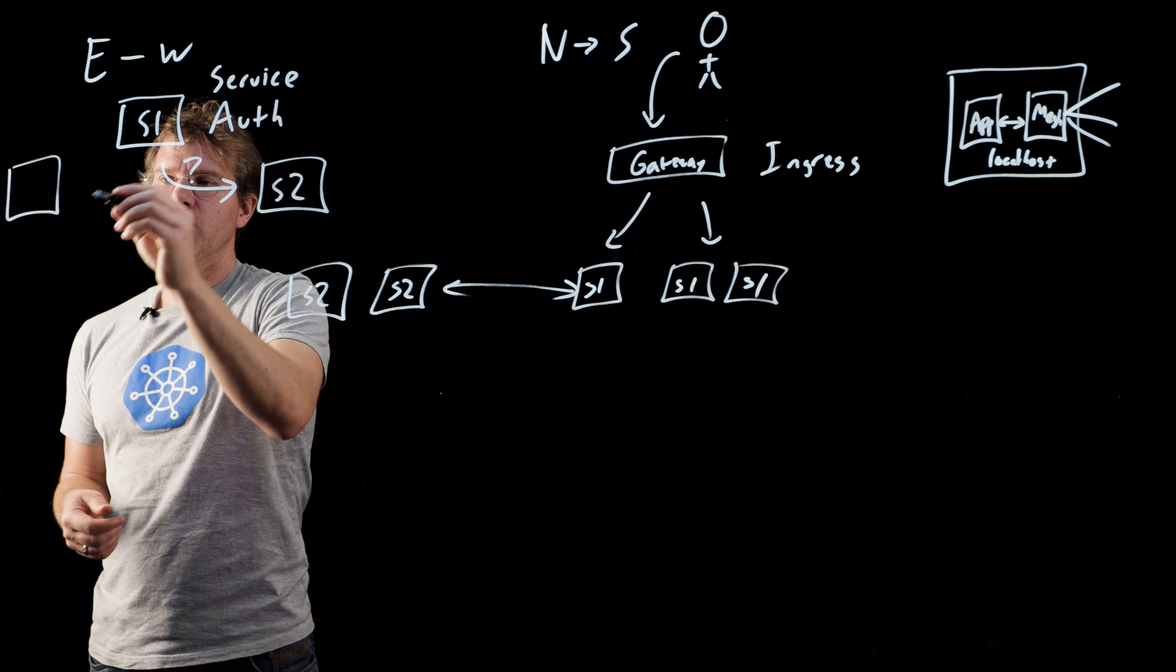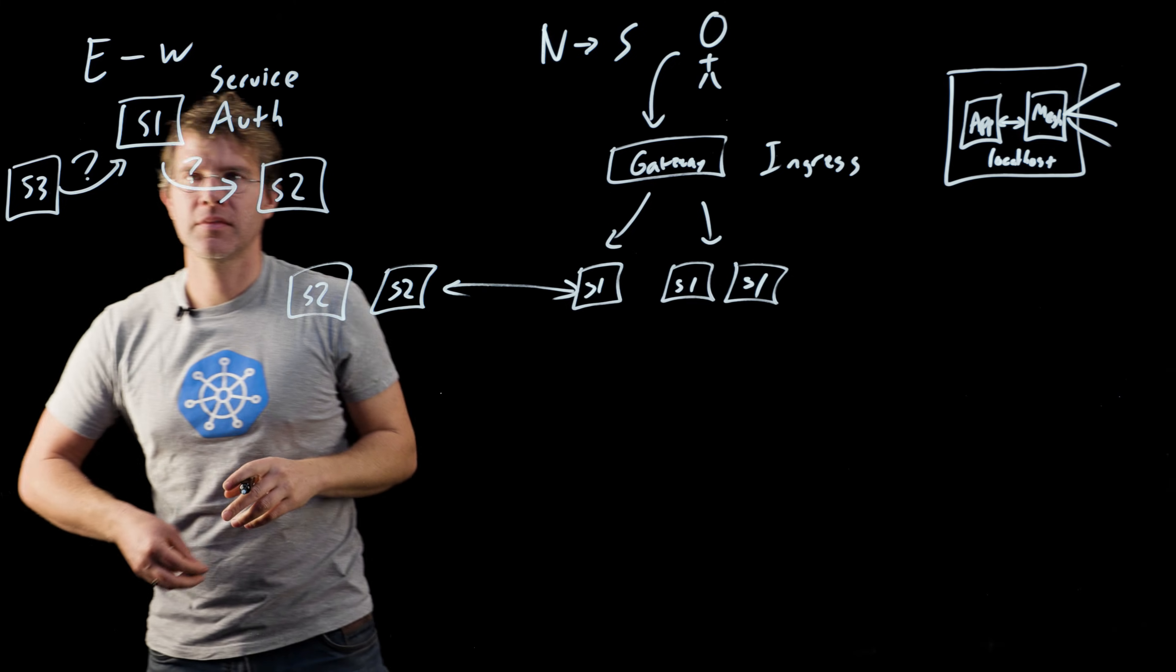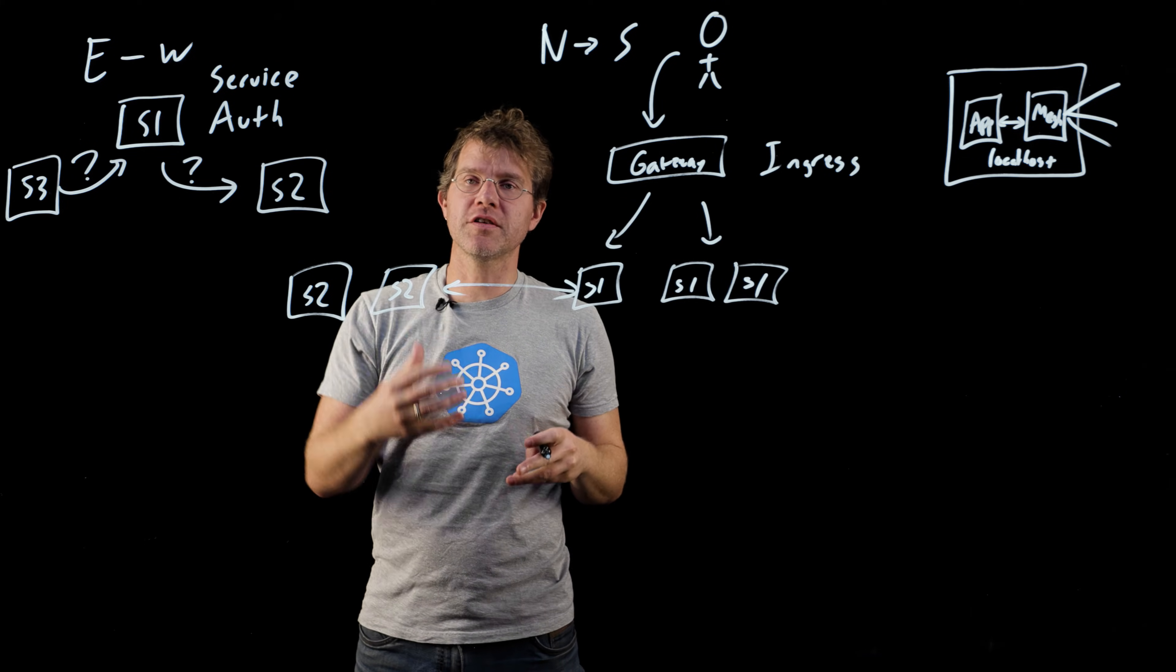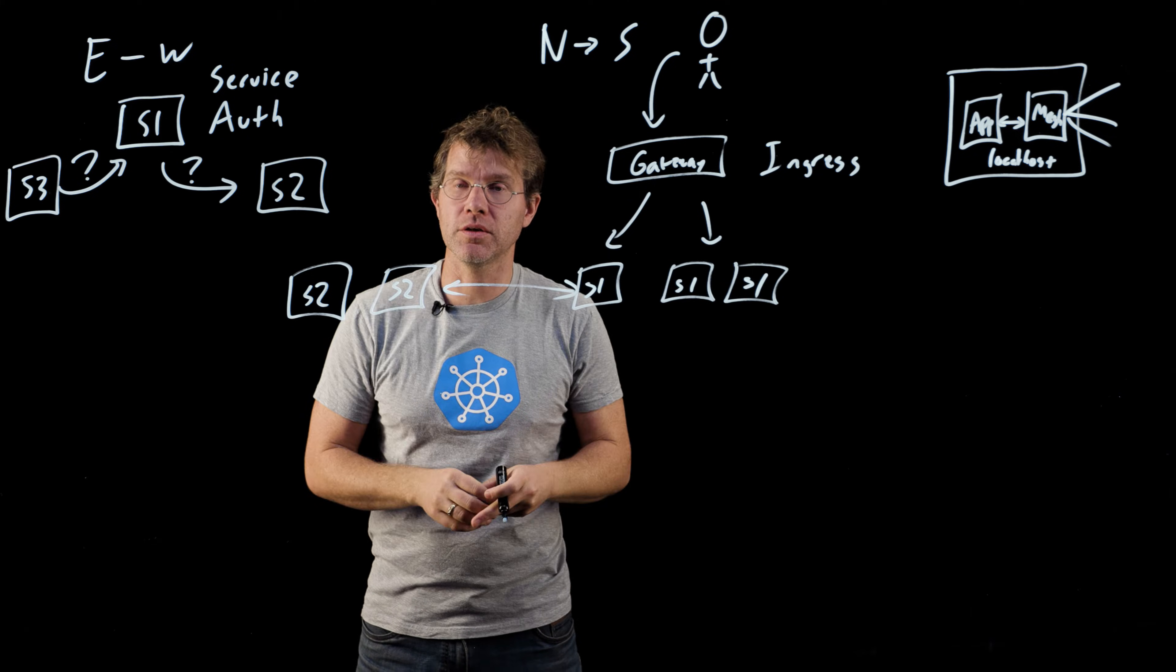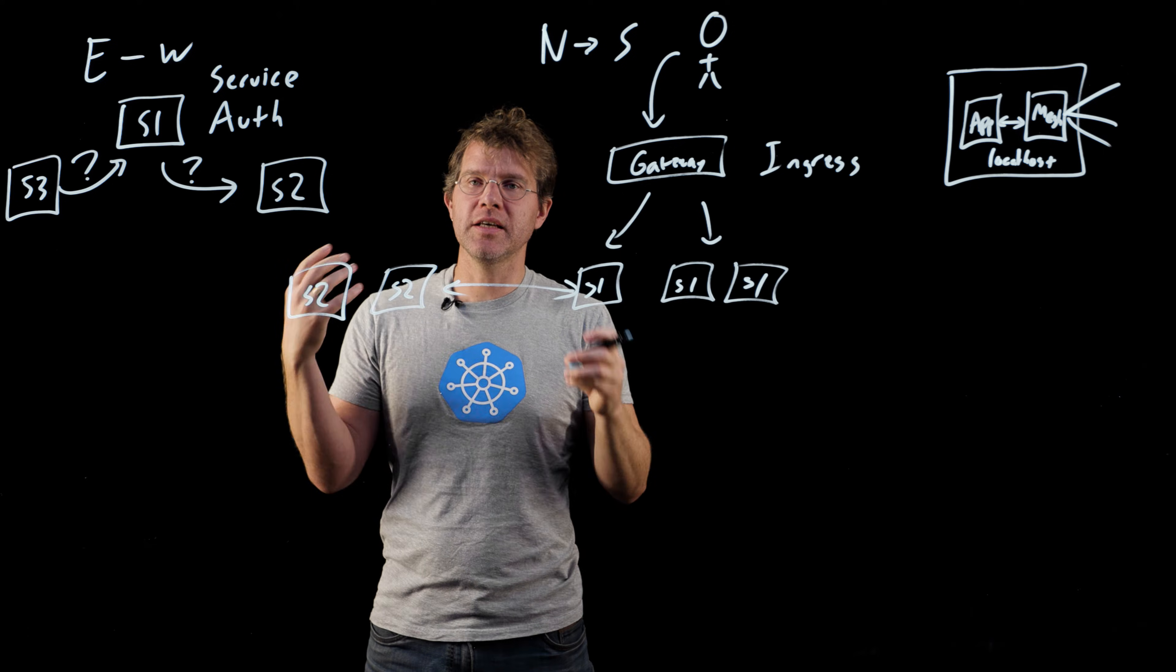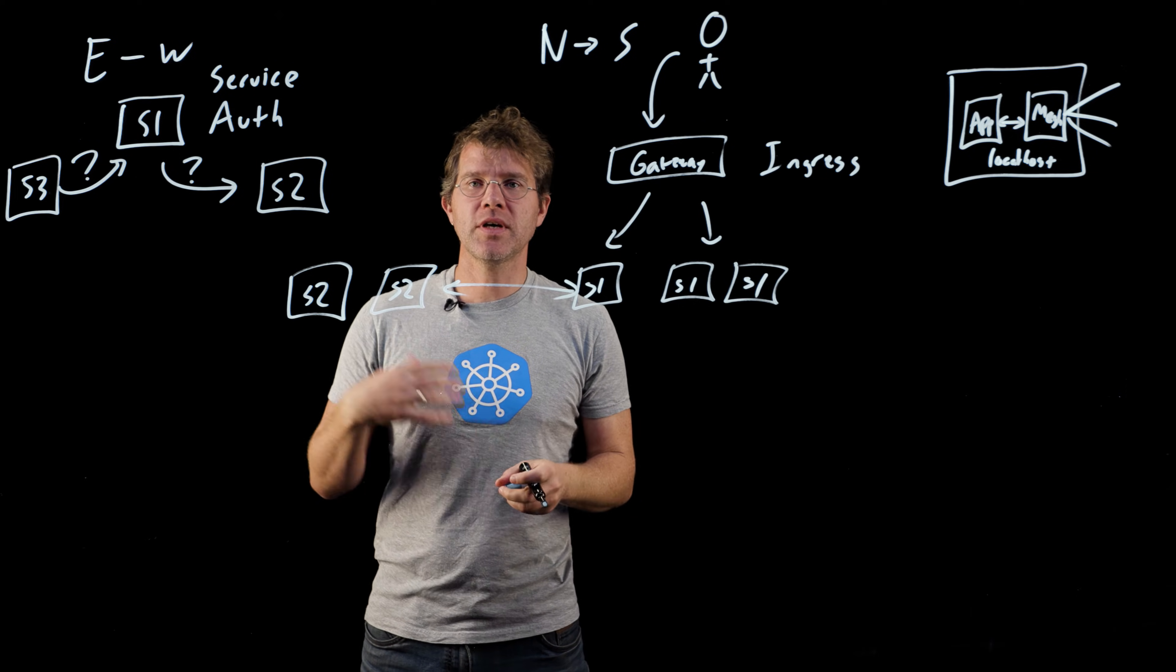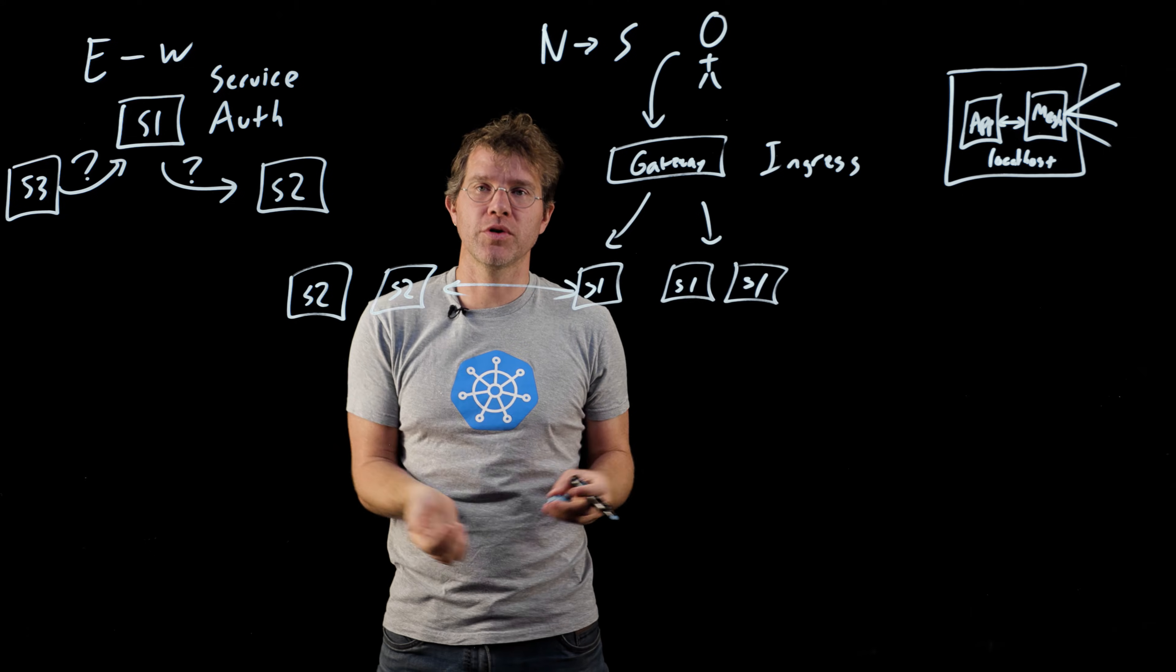And on the other side, if I'm service one, can service three talk to me? The service mesh can allow you to, in a declarative way, define the services that are allowed to talk to your service, and the services that your service is allowed to talk to. That's pretty useful in terms of establishing least privilege and other sorts of access control. It's also really useful in preventing accidents, because you can't have a development service accidentally put too much traffic onto your production instance.